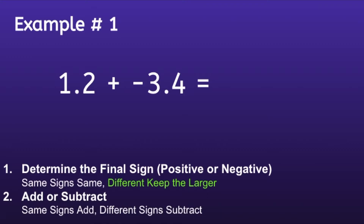What this means is we're going to keep the sign of the number with the greater absolute value. We can determine that by looking at the numbers, ignoring the negative sign, and determining which number is bigger: 1.2 or 3.4. If you said 3.4, you're exactly correct. And since 3.4 is a negative number, our solution will also be negative.